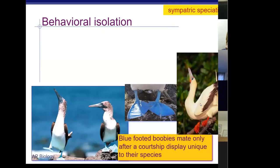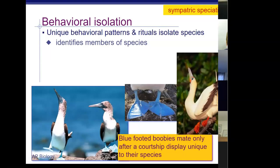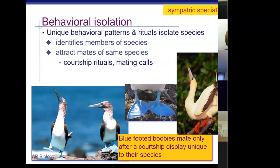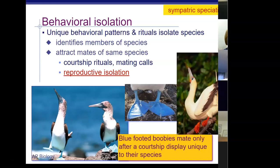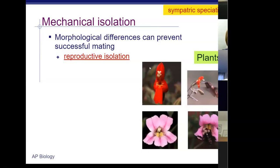Behavioral isolation includes dances, nest building, and songs. Blue-footed boobies, for example, mate only after a courtship display unique to their species — no other species would be attracted by their dance. This limits the gene pool because you only attract members of your own species. Whether it's a song, nest-building ability, or a dance, these rituals are another form of reproductive isolation that ultimately changes the population.